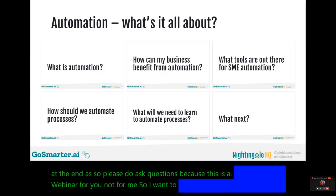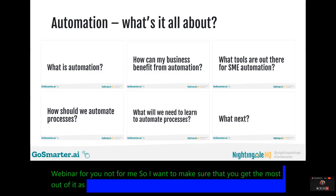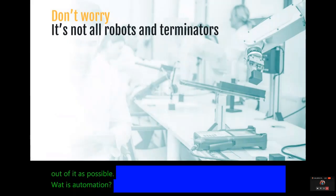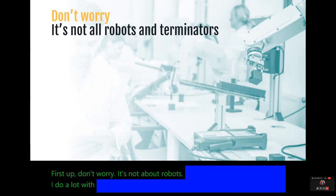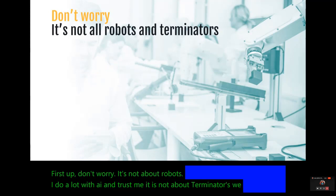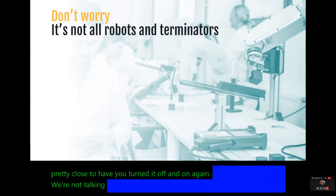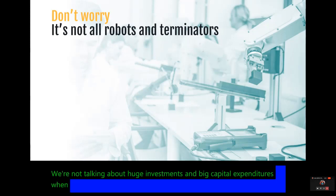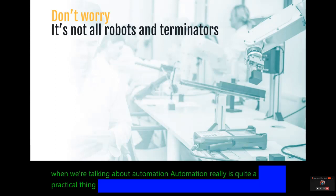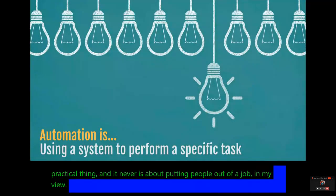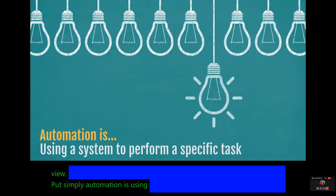So I want to make sure that you get the most out of it as possible. What is automation? First up, don't worry — it's not about robots. I do a lot with AI and trust me, it is not about Terminators. We're not talking about huge investments and big capital expenditures when we're talking about automation. Automation really is quite a practical thing, and it never is about putting people out of a job, in my view. Put simply, automation is using a system to perform a specific task.